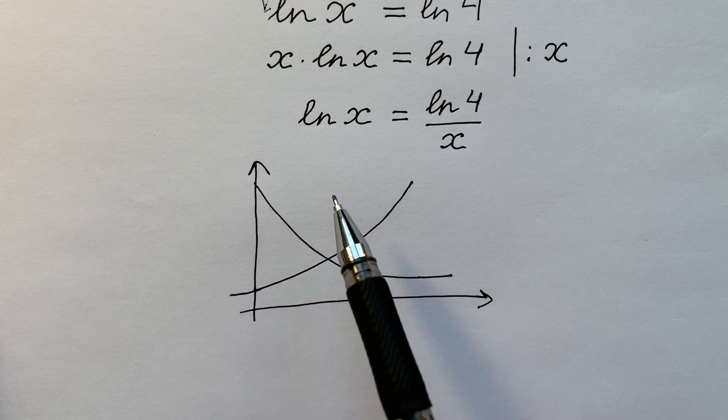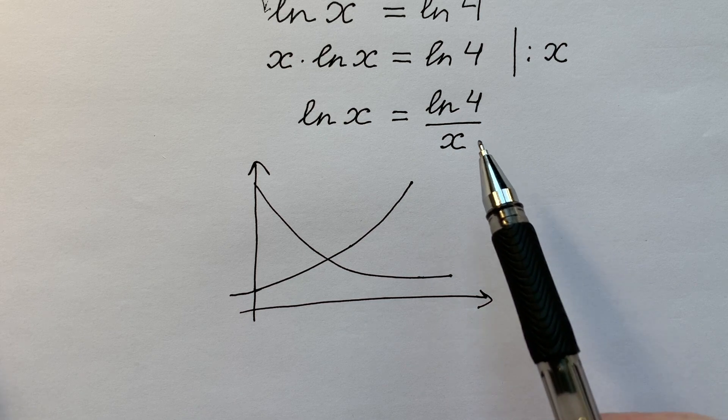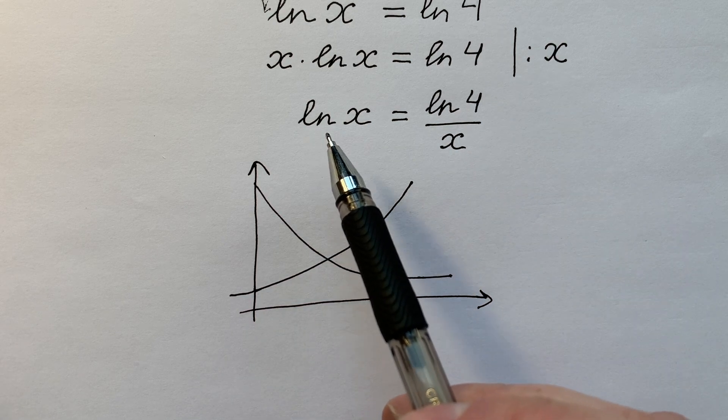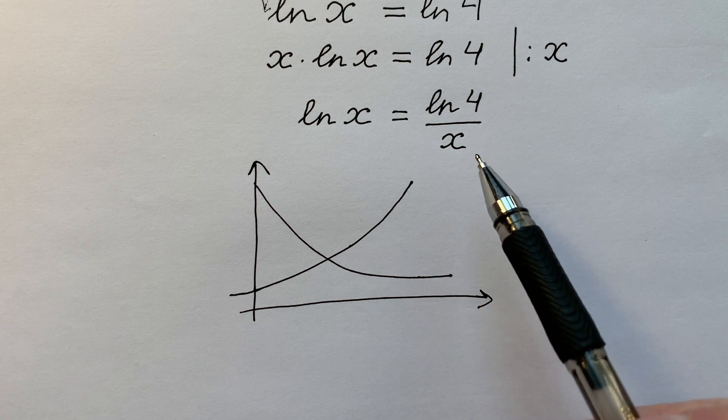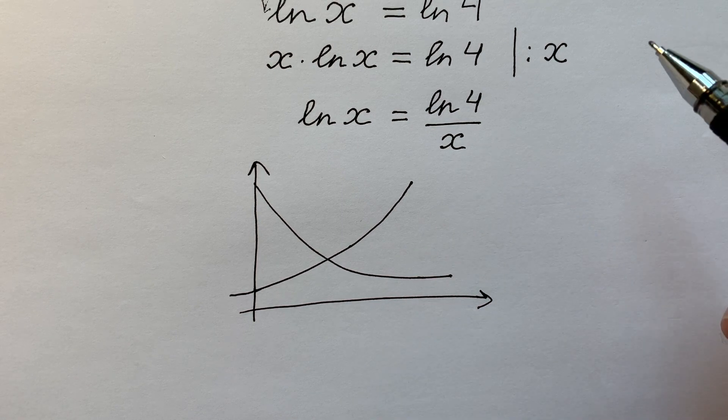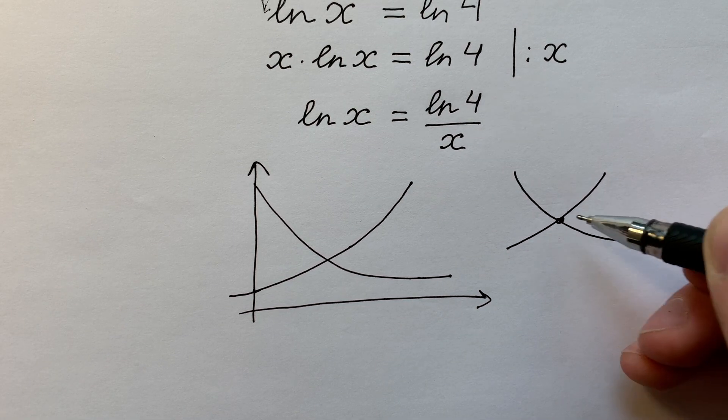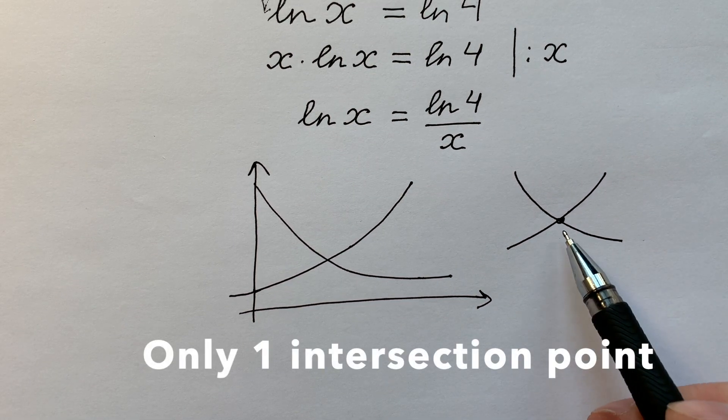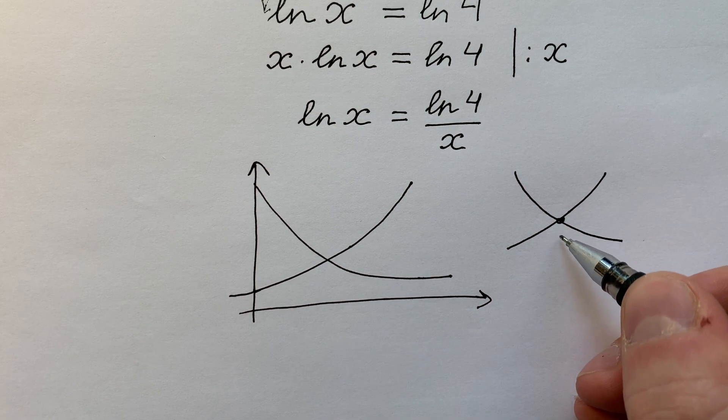But what is the property of two different functions staying on the left and the right side, where one of them is increasing monotonically and another is monotonically decreasing? Of course, these two functions can have one and only one common point, or only one intersection point. We don't know what is that, but it's only one.